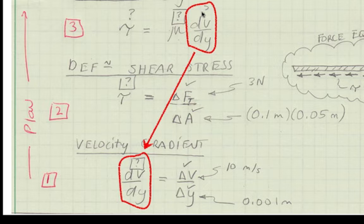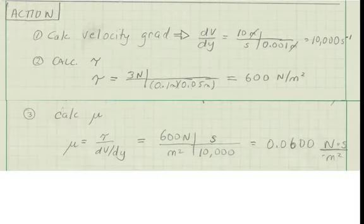To develop a plan, we ask the question, what is the easiest way to get numbers? I've outlined the plan in red. Step 1 is to use this equation to calculate velocity gradient. Step 2 is to use this equation to calculate shear stress. And step 3 is to use this equation to calculate the problem goal, which is viscosity. The calcs are shown here.